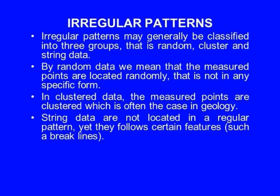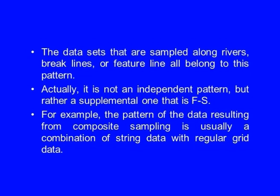Irregular patterns can generally be classified into three groups: random, cluster, and string data. In random data, measured points are located randomly with no specific form. In clustered data, measured points are clustered, which is often the case in geology. String data are not located in a regular pattern, yet they follow certain features such as a break line. Data sets sampled along rivers, break lines, or feature lines all belong to this pattern. It is not an independent pattern but rather a supplemental, feature-specific one. For example, the pattern resulting from composite sampling is usually a combination of string data with regular grid data.